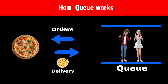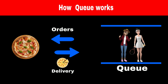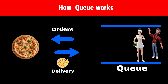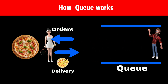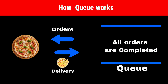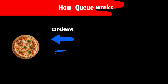Now Monica is at the front of the queue, so she will get the next order. If Chandler places an order, we will add him into the queue. Whenever the second order is ready, we will deliver it to Monica and remove her from the queue. Similarly, the next order will be delivered to Rachel, and after Rachel, Chandler will get the order. When the queue is empty, it means we have fulfilled all the orders.